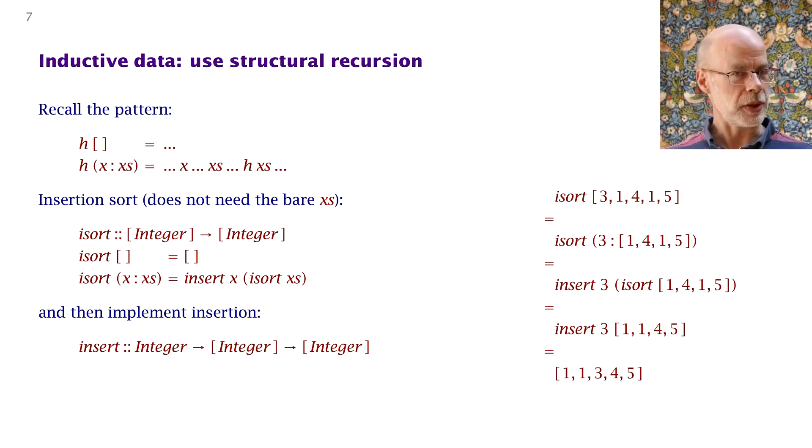So you consider the input. It's either empty or it's not. If it's empty of course you sort to get the empty list. Otherwise it's non-empty with an X and an X's. You can make a recursive call on the tail X's. So now you've got the head X and the sorted tail. What are you going to do? Well, you have to insert the head into the right place in the sorted tail. That gives you the main function: I sort X cons X's is insert X into I sort X's, and the only problem now is to define insert, which you can do by using the same techniques.